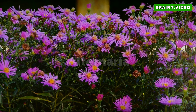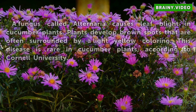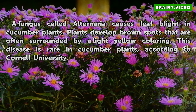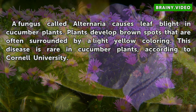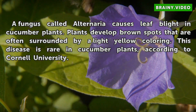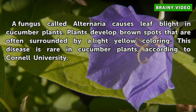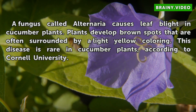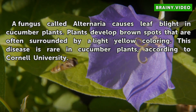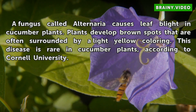Alternaria. A fungus called alternaria causes leaf blight in cucumber plants. Plants develop brown spots that are often surrounded by a light yellow coloring. This disease is rare in cucumber plants, according to Cornell University.